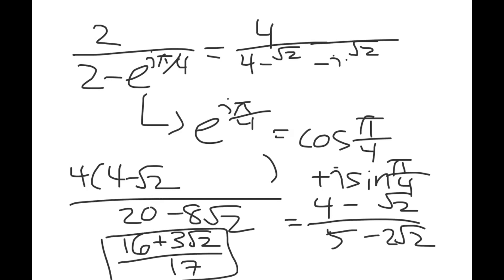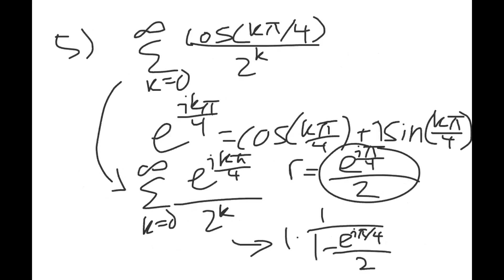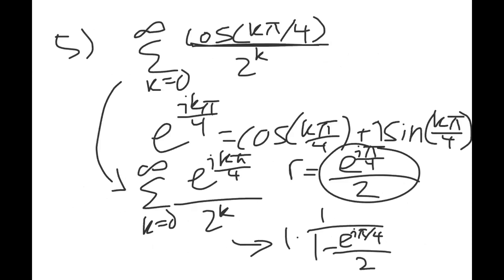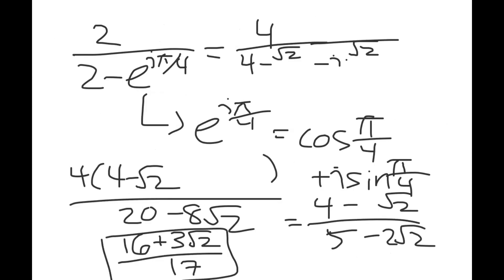For this problem, we used a common trick: when you see cosine in a geometric-looking sum, convert it to complex exponential form using e^(iθ) = cos θ + i sin θ, then find the real part of the resulting geometric series.